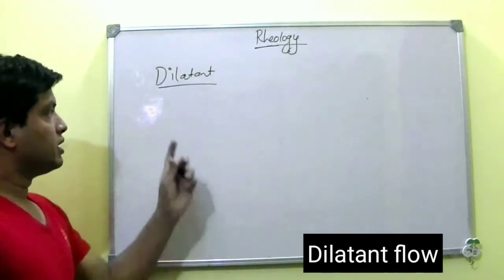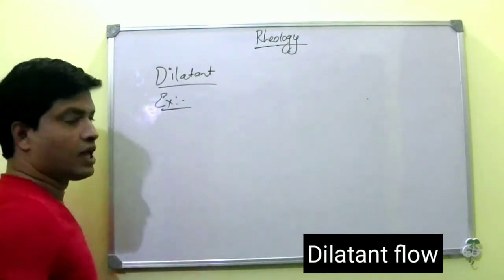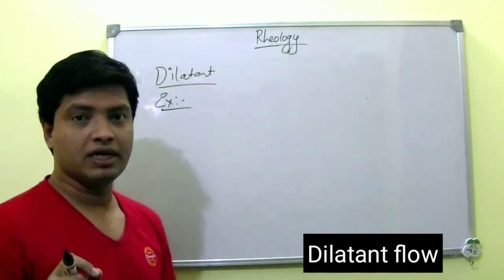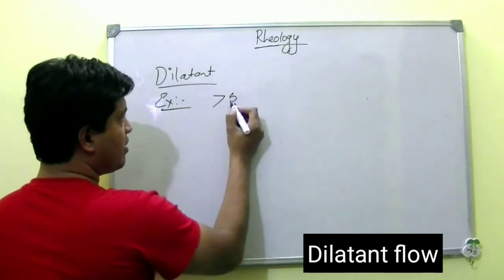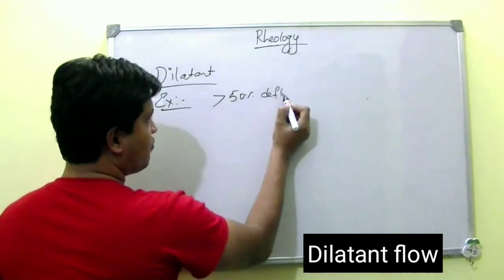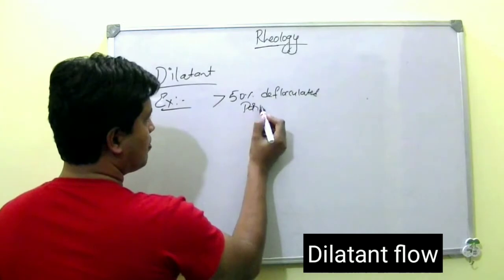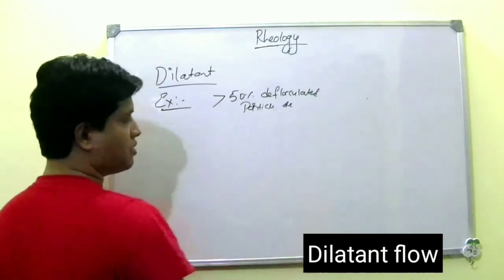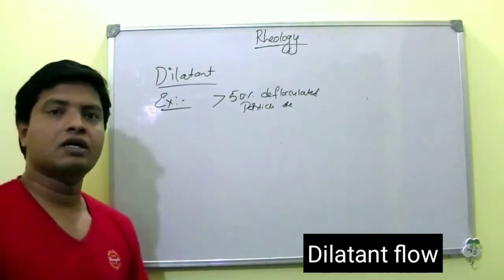This is a very interesting topic. The dilatant system example is any system in which more than 50% deflocculated particles are present. A system with more than 50% deflocculated particles is considered a dilatant system.